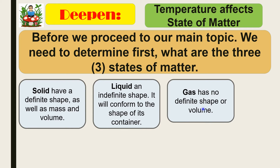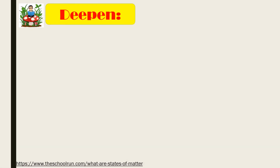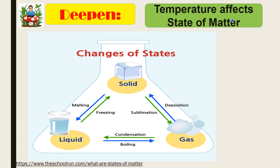Those are the three states of matter: solid, liquid, and gas. Now let's analyze how temperature affects the state of matter — change of states. Solid can turn into gas through the process of sublimation, and gas can turn back into solid through deposition. On the other hand, solid will become liquid through the process of melting, and liquid will become solid at the freezing point.